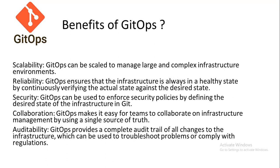GitOps also provides security by enforcing security policies through defining the desired state of the infrastructure in Git. Collaboration is improved because GitOps makes it easy for teams to collaborate on infrastructure management using a single source of truth. Finally, auditability is provided through a complete audit trail of all changes to the infrastructure, which can be used to troubleshoot problems or comply with regulations.